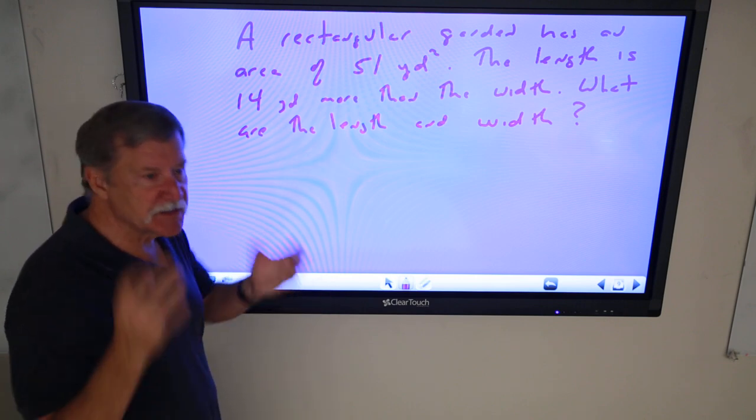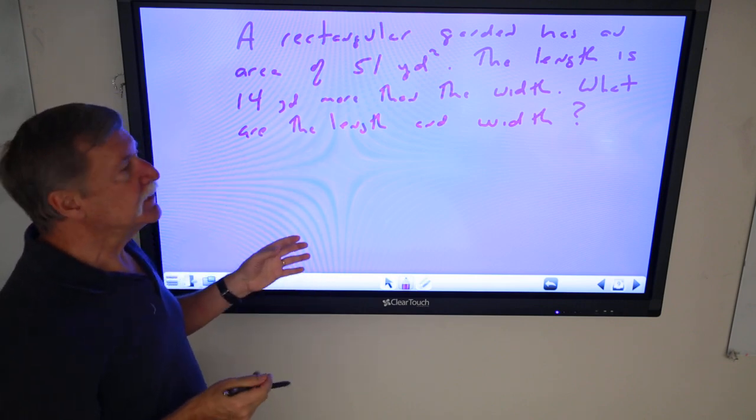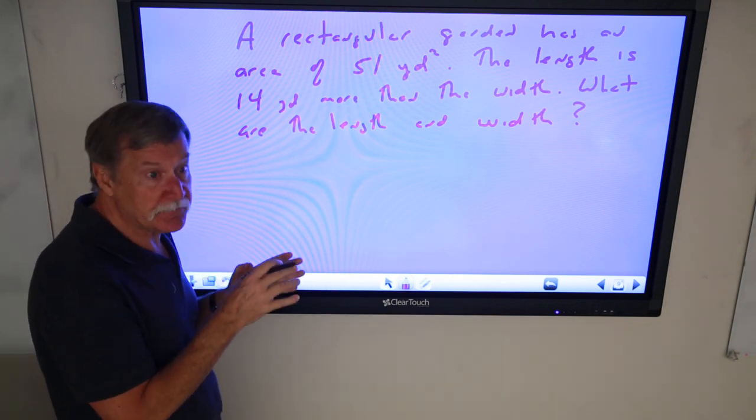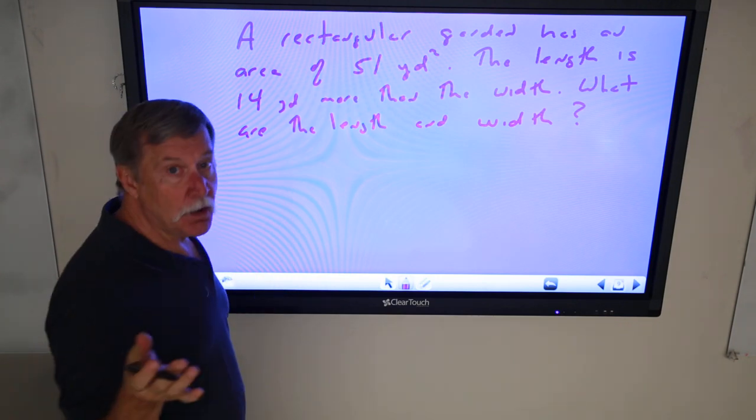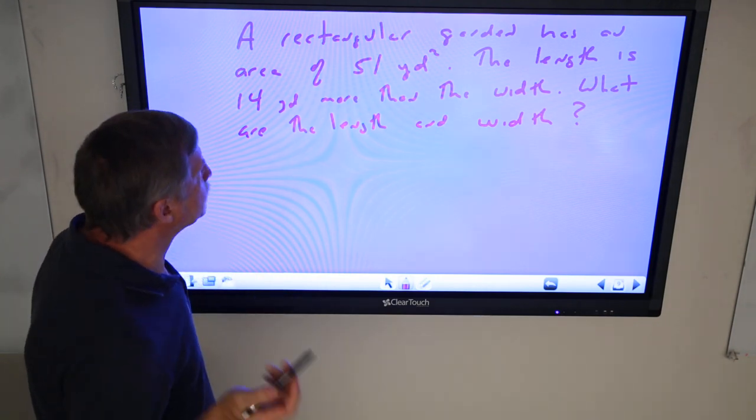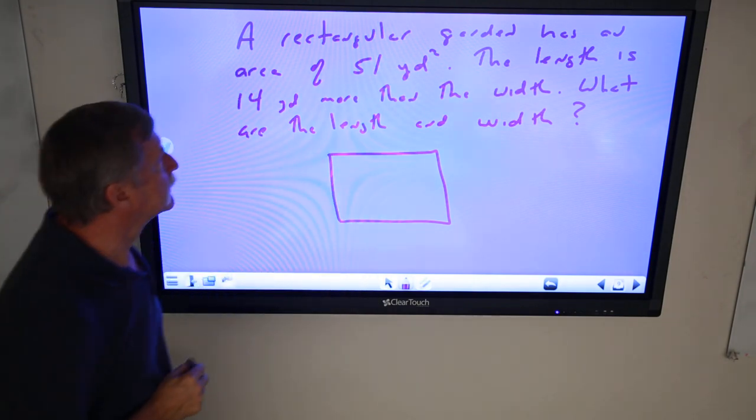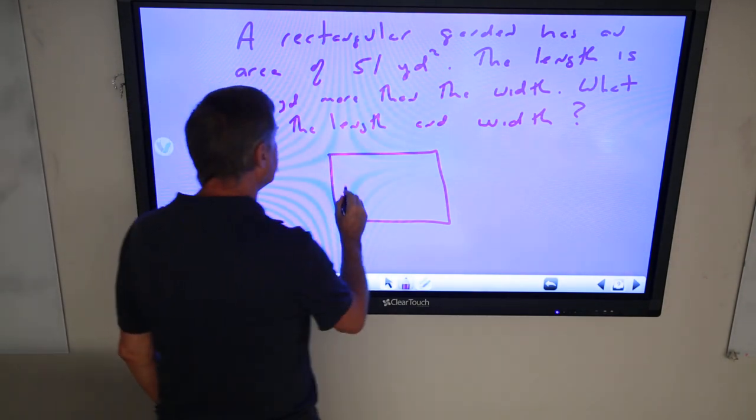Well, the first thing you've got to do is get a picture of this in your mind. Because this is coming at a problem a little different than we've done in 6th and 7th grade. So, as always, draw a picture. It's a rectangular garden, alright. So I draw a rectangular garden.